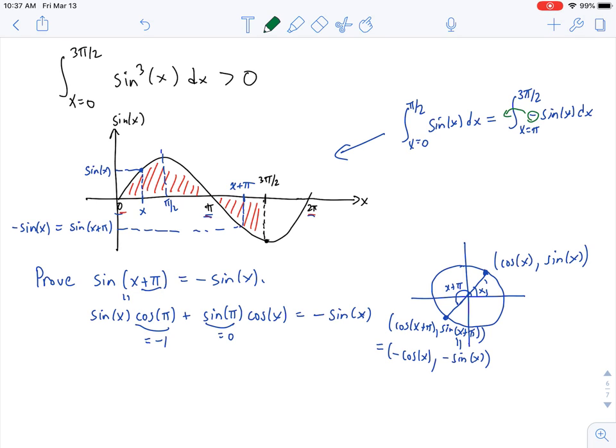And so what that tells me is that this green area here and this green area here have the exact same value up to a sign. And so if I add them together, I'm going to get 0.